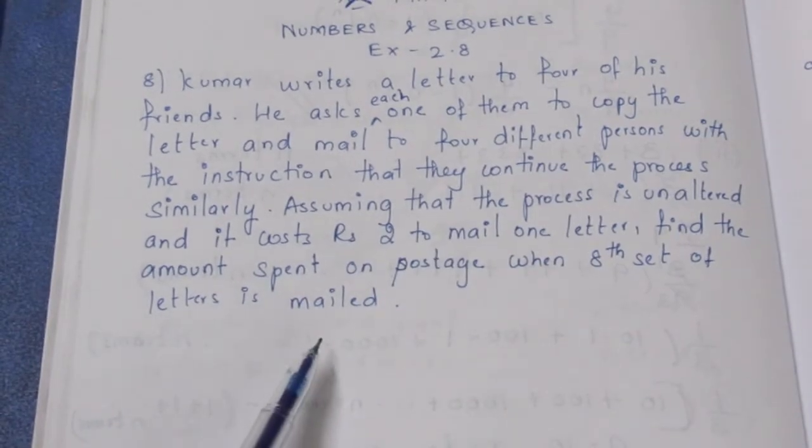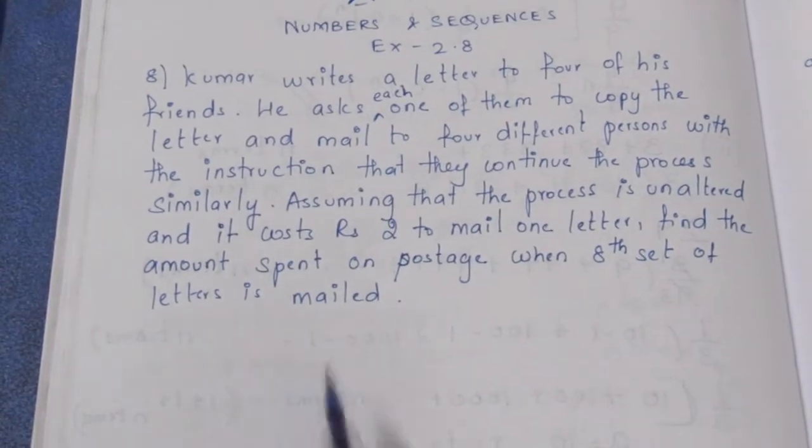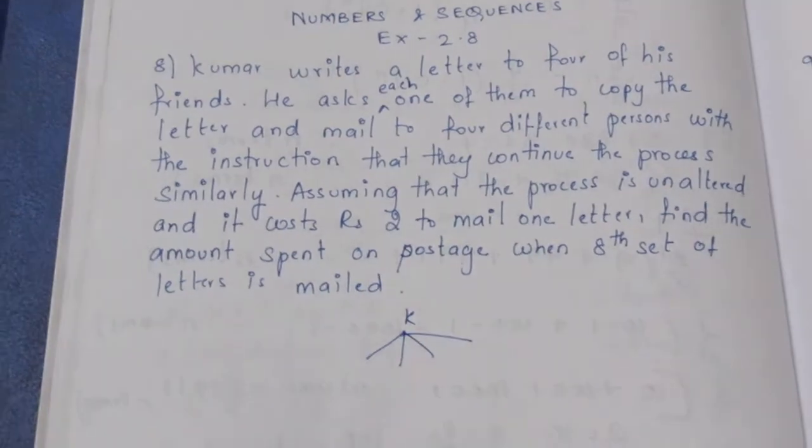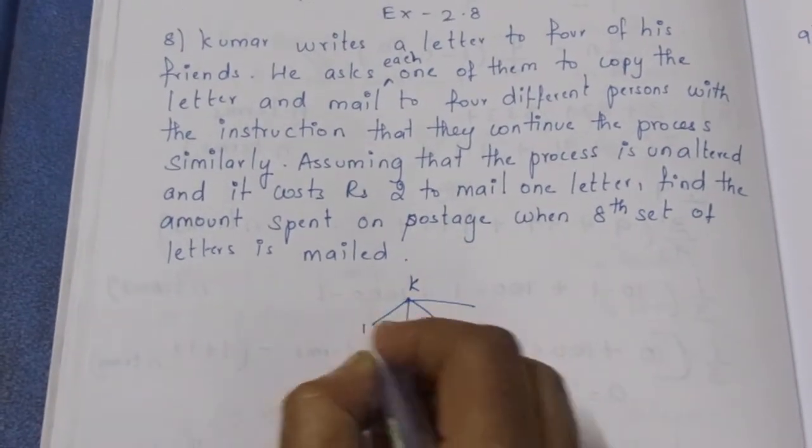So Kumar, what does he do? He writes a letter to 4 friends. So Kumar writes a letter to 4 friends. So 1, 2, 3, 4.